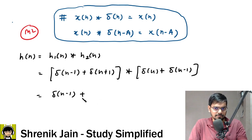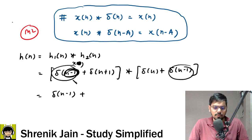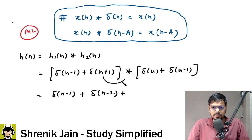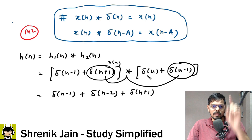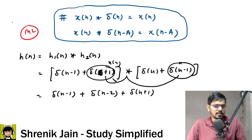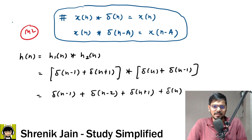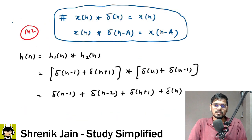δ(n−1) * δ(n−1): treating δ(n−1) as x(n), the wife says go to n−1, so replace n with n−1 → δ(n−2). δ(n+1) * δ(n) → δ(n+1). δ(n+1) * δ(n−1): wife says n−1, so n+1 becomes n+1−1 = n → δ(n). Final answer: δ(n−1) + δ(n−2) + δ(n+1) + δ(n), confirming option B.